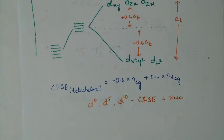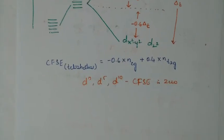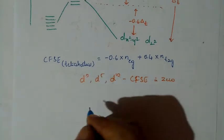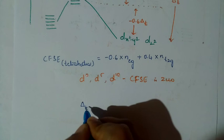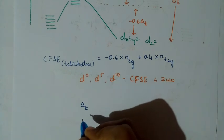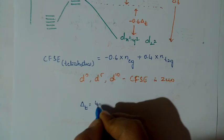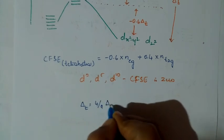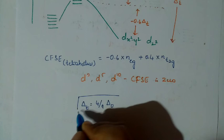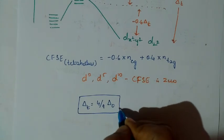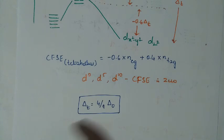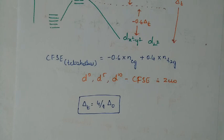In comparison between tetrahedral and octahedral complexes, Δt is always much smaller than Δo. The crystal field stabilization in tetrahedral complexes is very much smaller than in octahedral complexes. The relationship between them is: Δt = (4/9) × Δo.